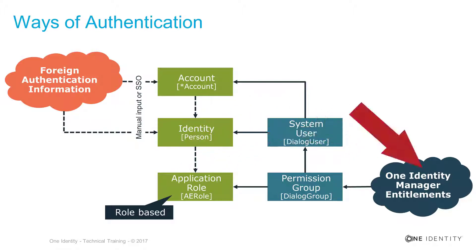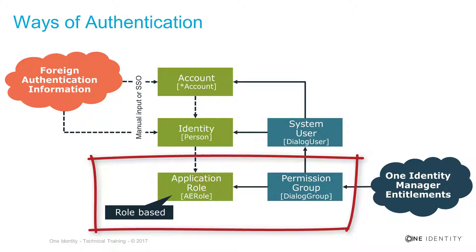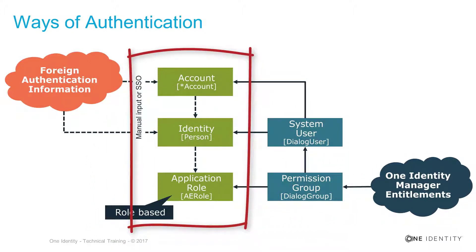On the very right-hand side, there is the dark blue cloud, which represents the One Identity Manager permission set — we will discuss this in part two of this video series. For now, we say this is a cloud of permissions you can get in One Identity Manager. These permissions must be assigned to permission objects — the lighter blue part on the right-hand side — which are the permission groups. Permission groups hold all the entitlements in identity manager. Permission groups can be assigned to system users, which are like a One Identity Manager account, and also to application roles, which is the management object for handling One Identity Manager permissions.